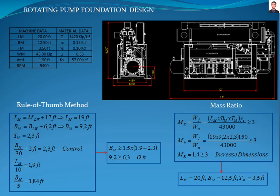In this tutorial we are going to design the foundation requirements for a single shaft pump with these features. The pump footprint is 12 feet length and 6.2 feet width. The height from the base of the machine to the center line of the shaft is 1.9 feet. The operating speed is 5400 RPM and the weight of the machine is 43 kilopounds. The machine data and the material data are in this table.